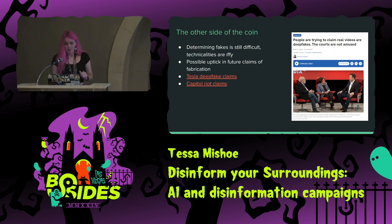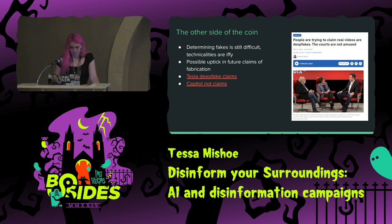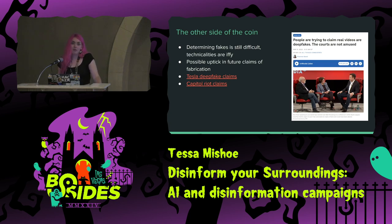Here's the other problem: determining fakes is still difficult, and some of the factors used in determinations can also be seen in untampered media. As a result, we've been seeing cases of real videos being claimed as deepfakes. This causes problems with court proceedings getting stopped up. An example was when Elon Musk went on stage at a Los Angeles tech conference and claimed self-driving capabilities for certain Tesla models in 2016 — capabilities that weren't there. Tesla later rebutted these claims as being deepfaked footage, something that did not amuse the judge. The defense in a Capitol riot case also attempted to discount prosecution arguments by claiming video and image evidence had been altered or deepfaked.